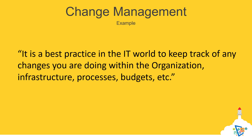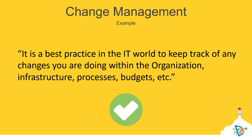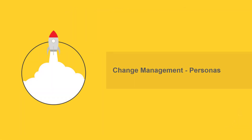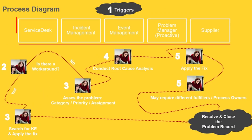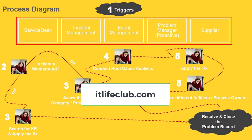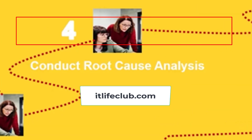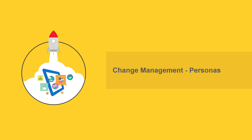That's it in terms of definition and examples. We should have a good understanding of how change management works, but we are still far away from the finish line, so let us continue and discuss the personas as well. Remember that the problem management process was interfacing with almost all the processes? I highly encourage you to watch that clip either on YouTube or at itlifeclub.com. When it comes to process interfacing, change management is no different than problem and incident management.